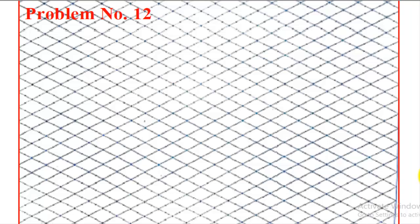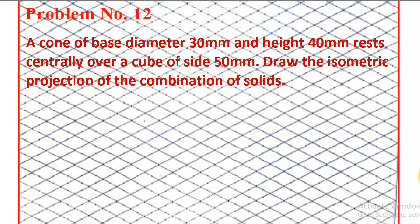Let me discuss problem number 12. The question is given like this: A cone of base diameter 30 mm and height 40 mm rests centrally over a cube of side 50 mm. Draw the isometric projection of the combination of solids.